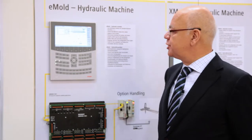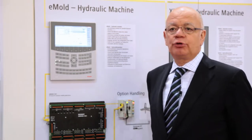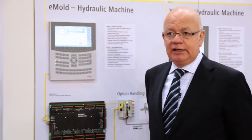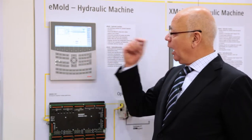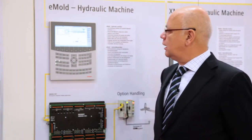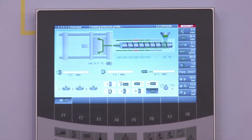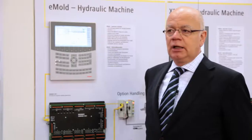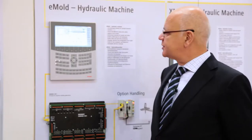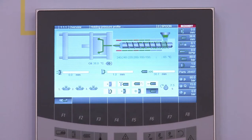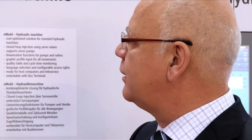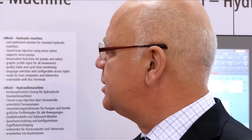Now I am coming to the user interface, which is very important for user-friendly operation of the machine. You see here the so-called overview page, which features a symbolic sketch of an injection molding machine — the injection unit on the right-hand side, the clamp unit on the left — and a headline showing the actual machine status.